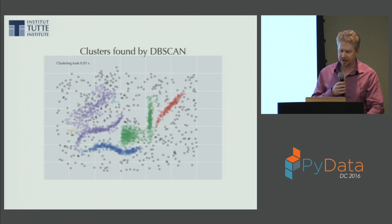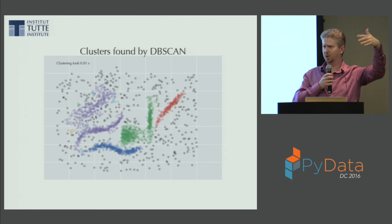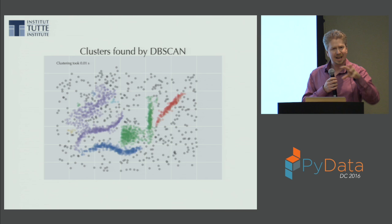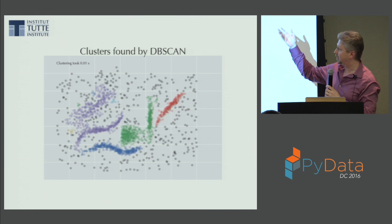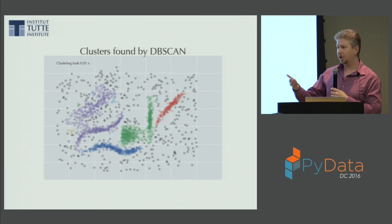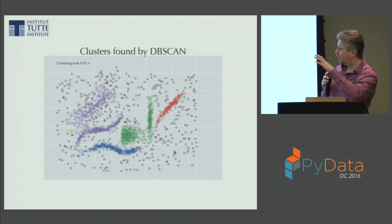DBSCAN is a density-based clustering algorithm that finds dense regions of space surrounded by sparse regions. It puts balls of a fixed radius epsilon around every point and counts how many other points are inside — that's the local density estimate. It then finds contiguous regions of dense points. This allows outlier/noise points in the background and arbitrarily shaped clusters. You still have parameters to choose: the ball size epsilon requires a lot of tuning to find the right solution, and here we've merged some clusters we probably shouldn't have.